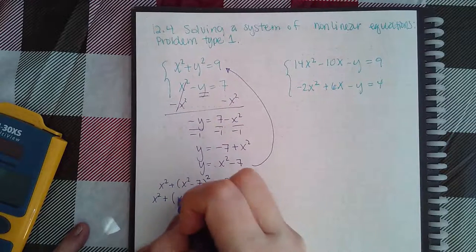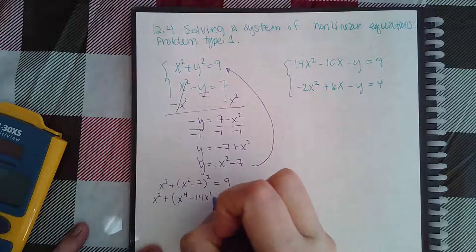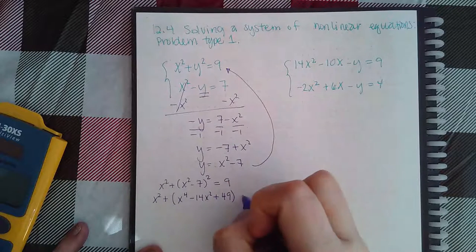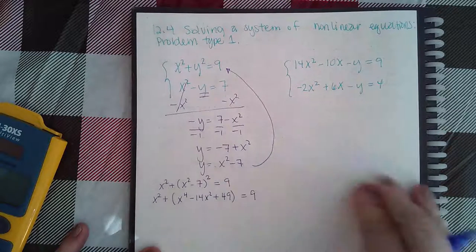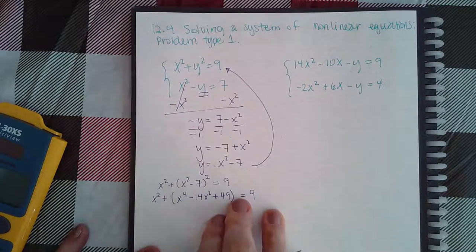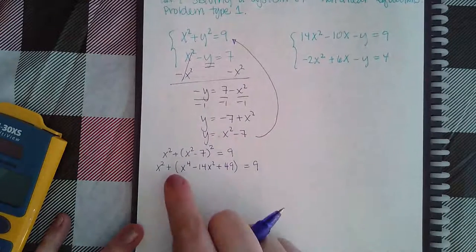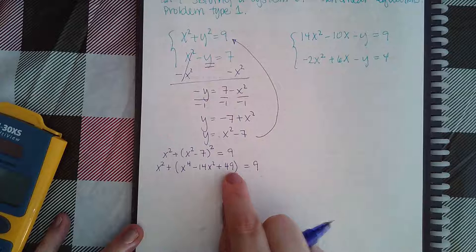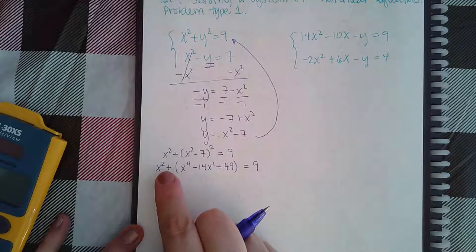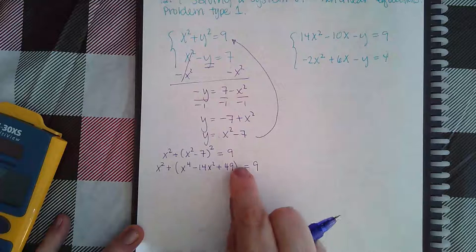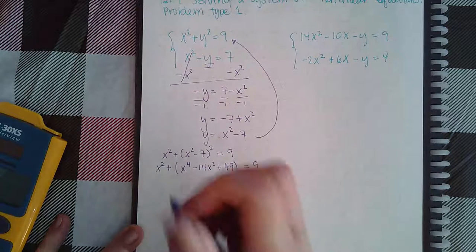When I foil this out I get x⁴ minus 14x² plus 49. If you need to foil that out off to the side, that's fine. I put the result in parentheses because if this were a minus, that minus sign would affect every single one of these terms.